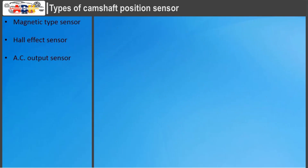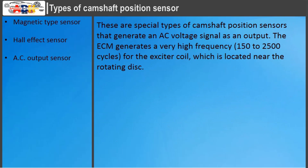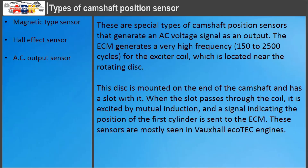AC output sensors are special types of camshaft position sensors that generate an AC voltage signal as an output. The ECM generates a very high frequency — 150 to 2500 cycles — for the exciter coil, which is located near the rotating disk. This disk is mounted on the end of the camshaft and has a slot. When the slot passes through the coil, it is excited by mutual induction, and a signal indicating the position of the first cylinder is sent to the ECM. These sensors are mostly seen in Vauxhall EcoTEC engines.